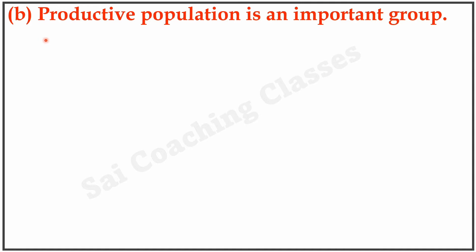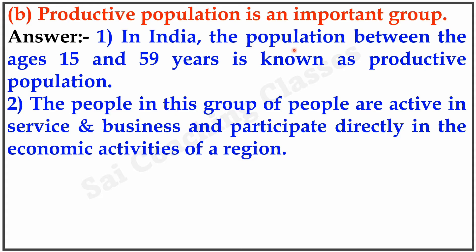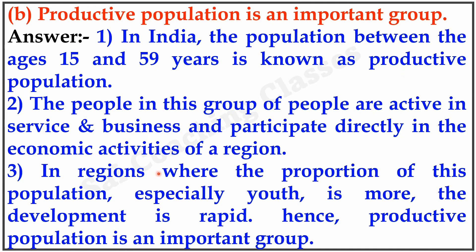B. Productive population is an important group. Answer: In India, the population between the ages 15 and 59 years is known as productive population. The people in this group are active in services and businesses and participate directly in the economic activities of the region. In regions where the proportion of this population, especially youth, is more, development is rapid. Hence, productive population is an important group.